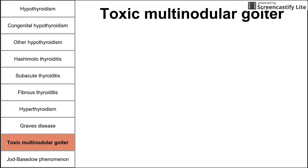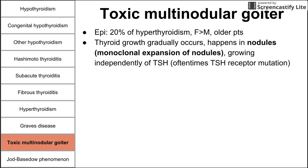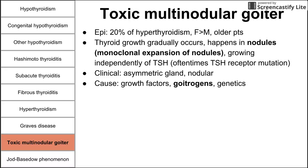Another cause of hyperthyroidism is toxic multinodular goiter, accounting for about 20% of cases, more common in women and older patients. Thyroid growth occurs gradually in nodules with monoclonal expansion — not cancerous, but growing independently of TSH, so pituitary down-regulation of TSH has no effect. Clinically, the gland is asymmetric and nodular, helping differentiate it from Graves' disease. Causes include growth factors, goitrogens, and genetics.